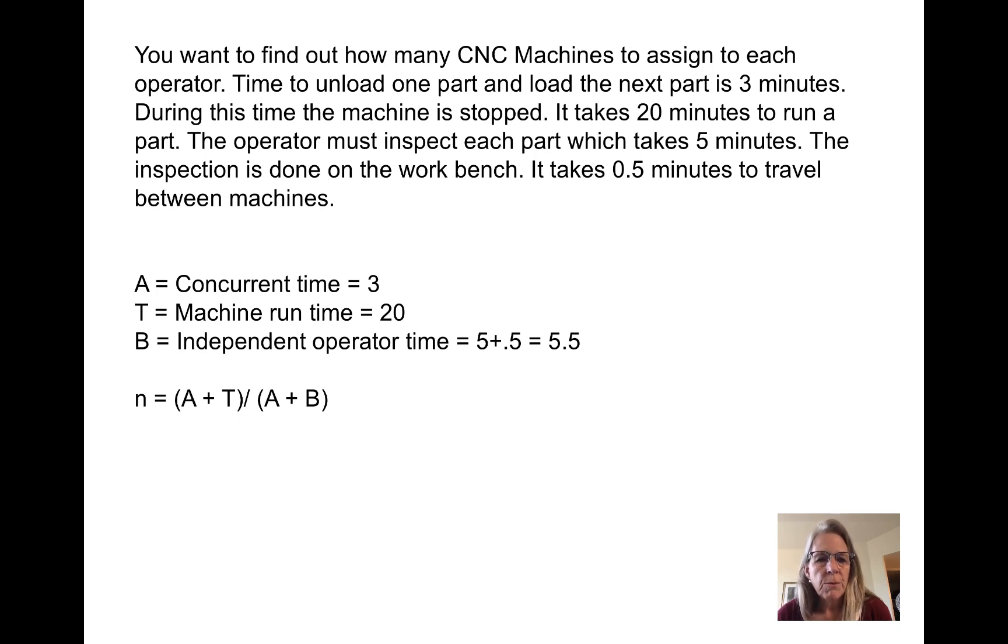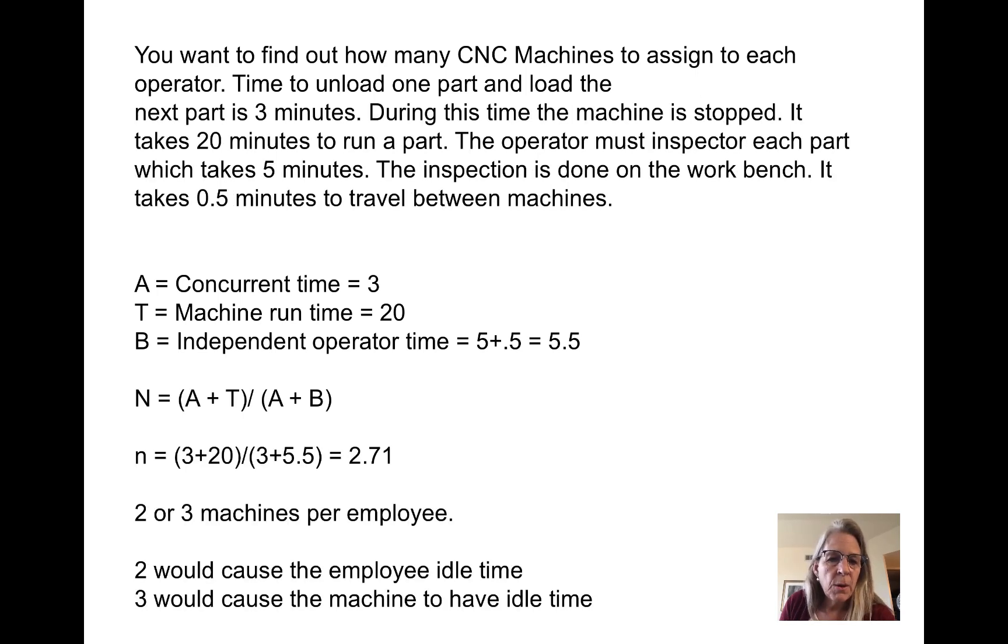Concurrent time is three minutes, which is the load and unload time. The machine run time is 20 minutes. The independent operator time is five minutes for inspection plus half a minute for travel. If we take a plus t divided by a plus b, we get 2.7 machines that are necessary for the best balance for each person.